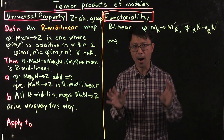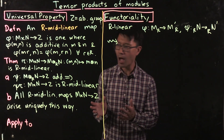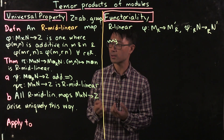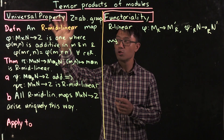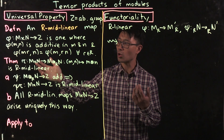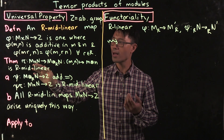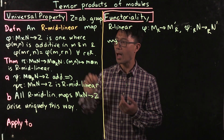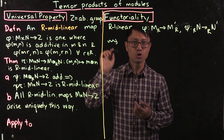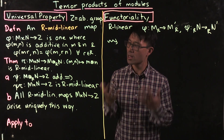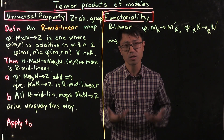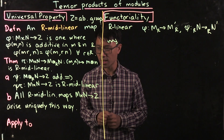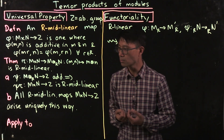That's the analogue of bilinear maps. The theorem we have is exactly the same universal property as for vector spaces. There's a universal R-midlinear map: given M and N, there's a map τ from M × N to the abelian group M ⊗ᴿ N, which sends the pair (m, n) to the elementary tensor m ⊗ n. This is R-midlinear, and it's quite easy to check — the proof is the same as for vector spaces. Furthermore, if you have any additive map ψ from M ⊗ᴿ N to Z, you can compose it with τ, and since you're composing an R-midlinear map with an additive map, the result is R-midlinear as well.